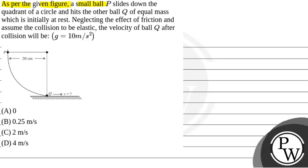as per the given figure, a small ball P slides down the quadrant of a circle and hits the other ball Q of equal mass, which is initially at rest.